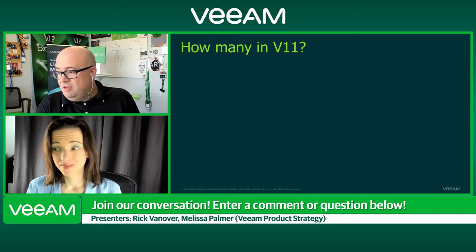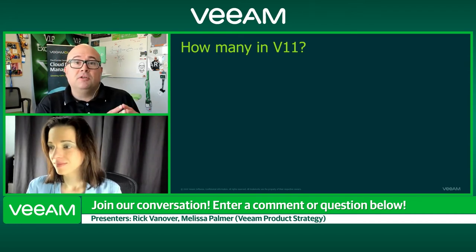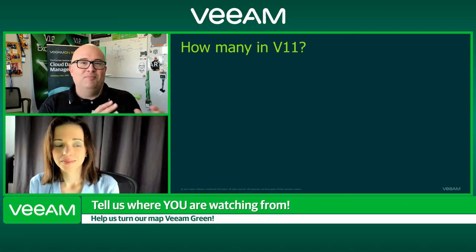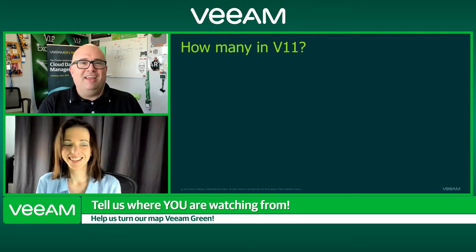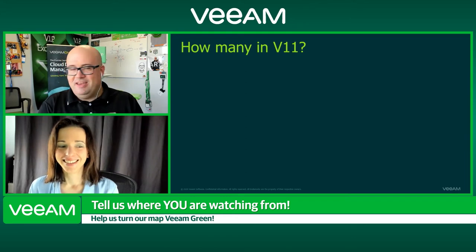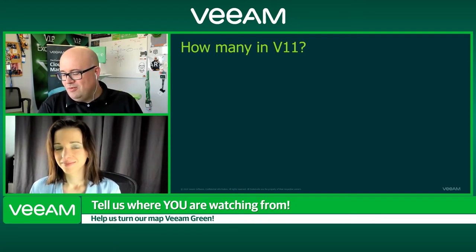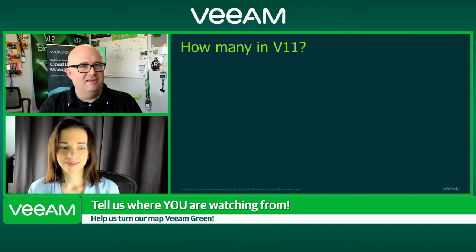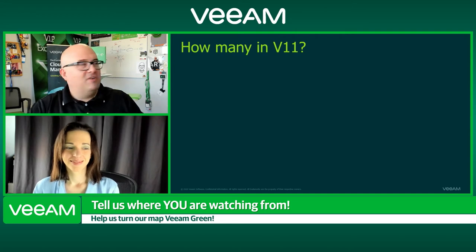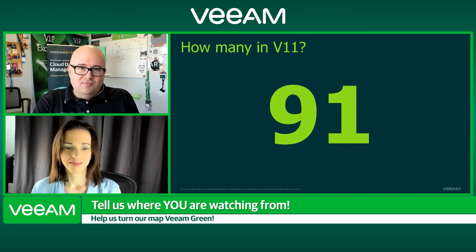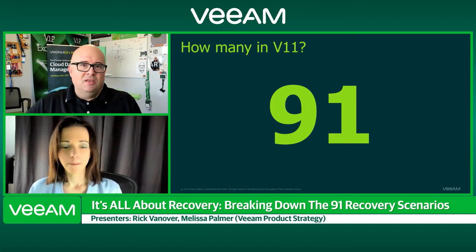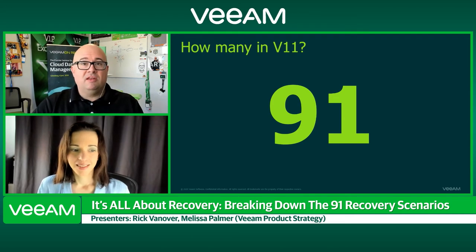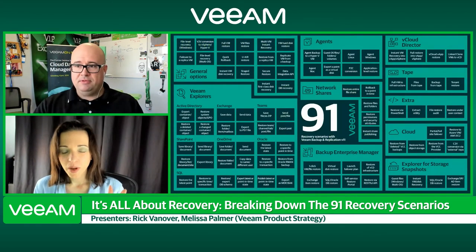We've got some great activity going with the numbers. Dan and Danny are guessing — we've got a couple of the numbers coming in here. Good guess, Wallace. All right, let's show it here — it's 91. Version 11 has 91 recovery scenarios, and I'm still having fun. This is an incredible number. When Andrew breaks this down, we break it down across categories. Here's the chart — it's getting big. There are a lot of ways to recover and people might be sitting here thinking, wow, 91 ways to recover, that sounds really difficult.